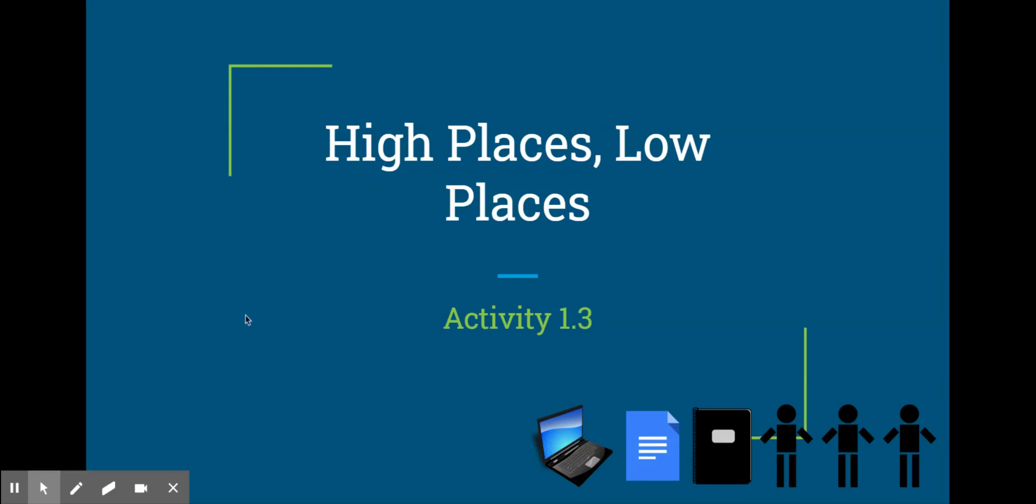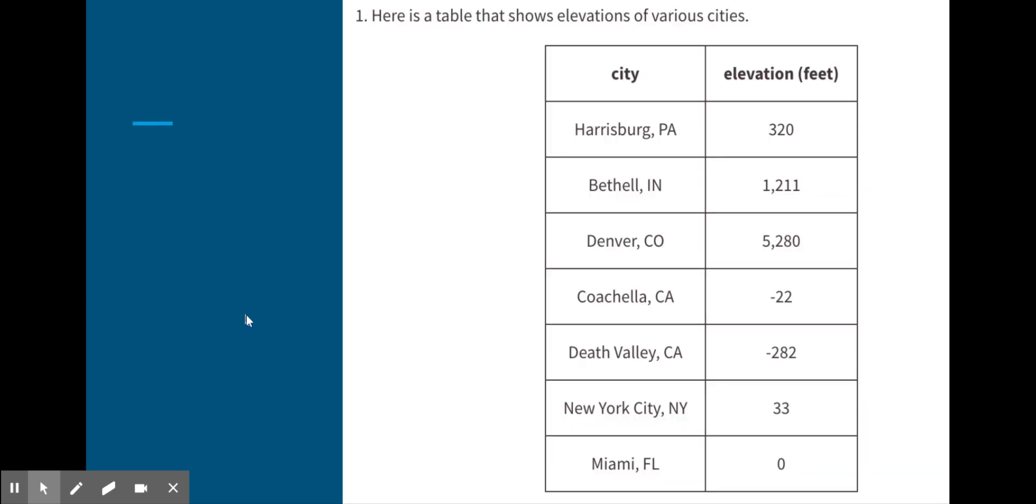High places, low places. Let's continue to explore how we represent elevations. Here's a table that shows the elevation for several different cities. Pause the video now and try to explain in your own words what the numbers mean. You can use the sentence frames to help you.